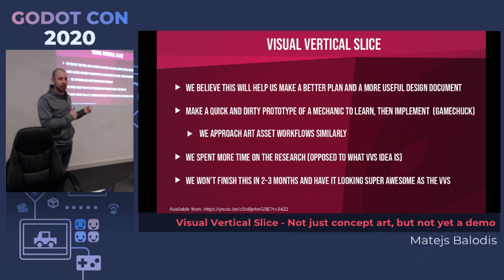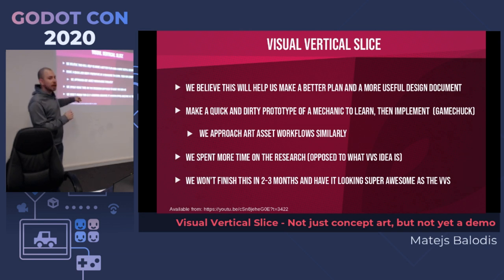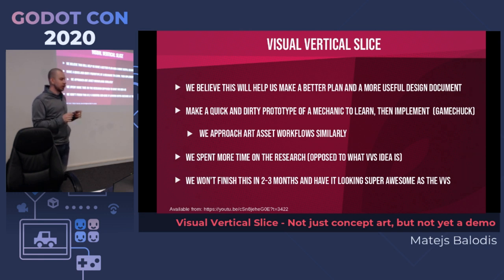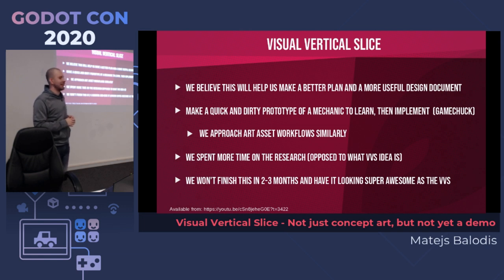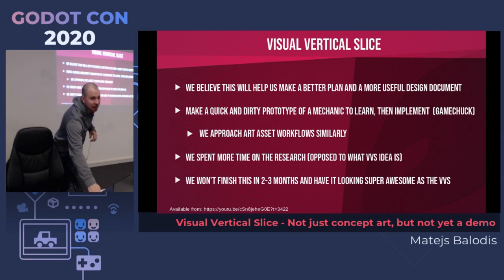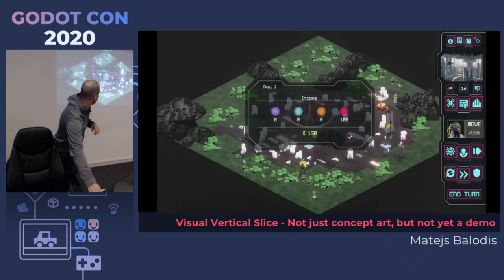This is our approach to the visual vertical slice — trying out things, making a character, going through each step, seeing how it looks when you put it in Godot and what we can improve. So this is not going to be a one-and-a-half, two, or even three month project for us — it's going to be a bit longer. I'm going to show you where we are right now with this visual vertical slice. It's still rough, but you can see the in-progress look before the design is finished.